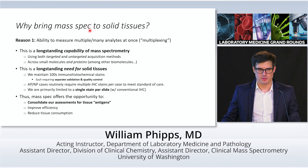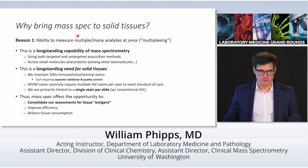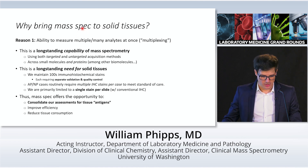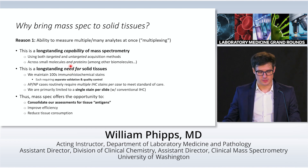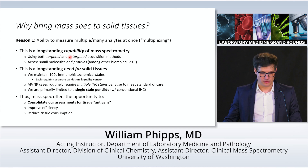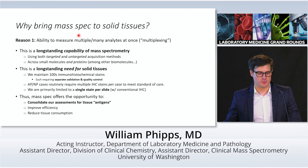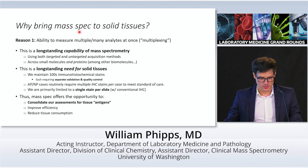Starting with the question: why bring mass spectrometry to solid tissues? The first reason is the ability to measure multiple or many analytes at once — we call this multiplexing. This is a long-standing capability of mass spectrometry using both targeted and untargeted acquisition approaches across small molecules and proteins. Meanwhile, this is a long-standing need for solid tissues, for which we maintain hundreds of immunohistochemical stains, each requiring separate validation and quality control. Cases often require multiple IHC stains per case, but we're limited to one stain per slide, creating built-in inefficiencies and the risk of running out of tissue. Mass spectrometry offers an opportunity to consolidate assessments, improve efficiency, and reduce tissue consumption.